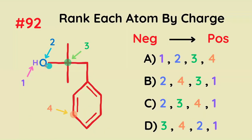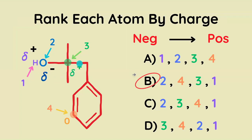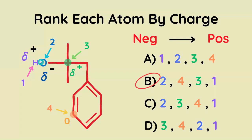Rank each of these highlighted atoms by charge. Atom 2 is the most negative, because it's the most electronegative and is surrounded by electropositive atoms. Atom 4 is going to be neutral, in the middle. Atom 1, this hydrogen, is going to be more electropositive than carbon because of the greater electronegativity difference with oxygen.